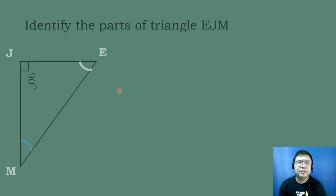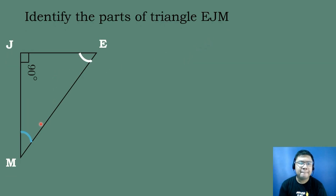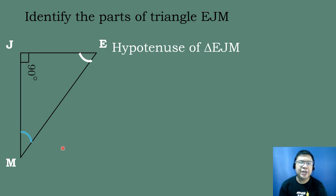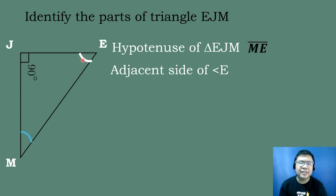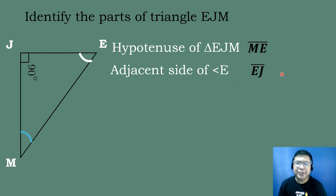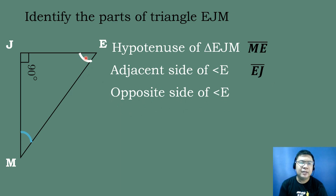Let's go to our last example: identify the parts of right triangle EJM. The given right angle is at angle J, which is equal to 90 degrees. The hypotenuse is the opposite side of the right angle, which is segment EM. For the adjacent side of angle E, it is the side in between angle E and the right angle, which is segment EJ. The opposite side of angle E is segment JM.